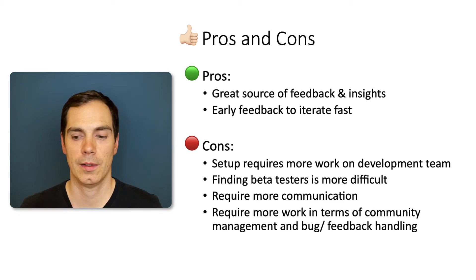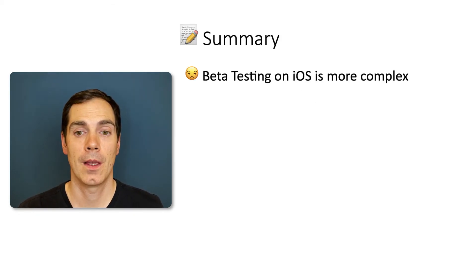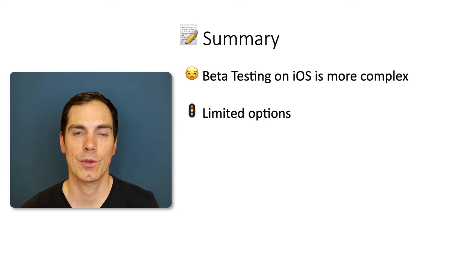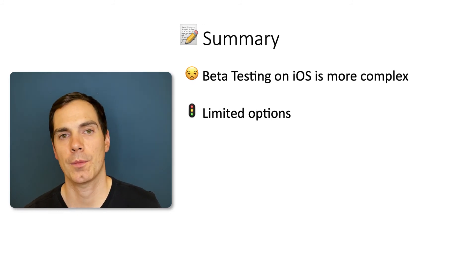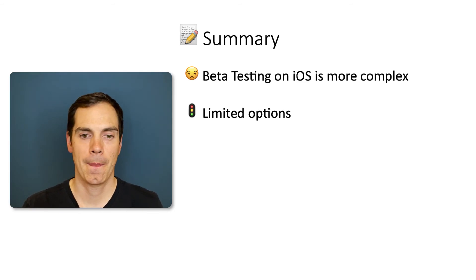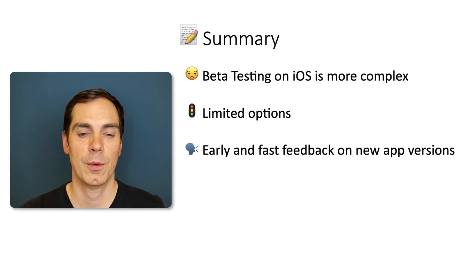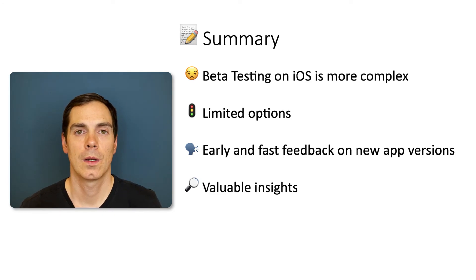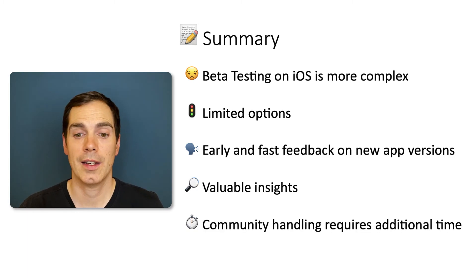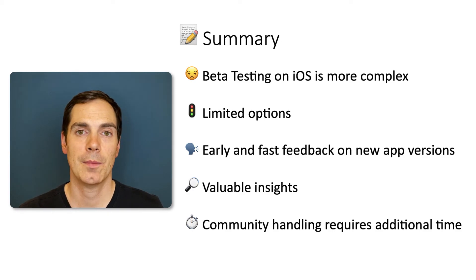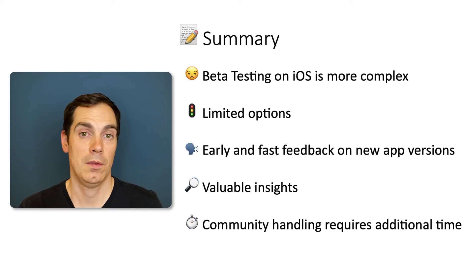To summarize: beta testing on iOS is more complex to set up compared to Android. You have two main options — internal testing with up to 100 testers, and external testing via distribution frameworks. Despite the complexity, you can still get early and fast feedback on new app versions, which is worth the effort. You get valuable insights that make the app better. However, community handling requires significant additional time — depending on app size and community scale, it could be a full-time job for one or two people.